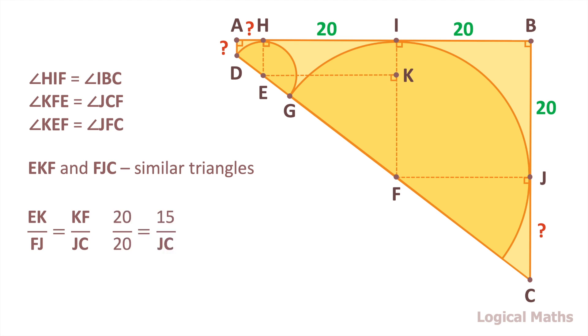Substituting the values, we obtain that ratio 20 to 20 is equal to ratio 15 to JC. After solving the equation, we find out that the length of JC is 15.